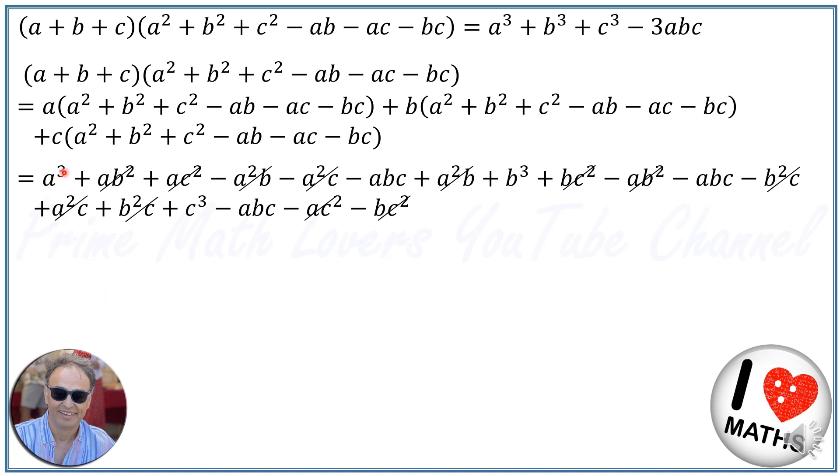So we will have a cubed plus b cubed plus c cubed minus abc minus abc minus abc. That means it will be a cubed plus b cubed plus c cubed minus 3abc.